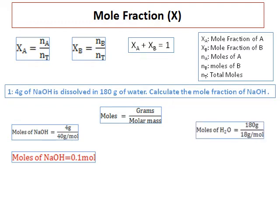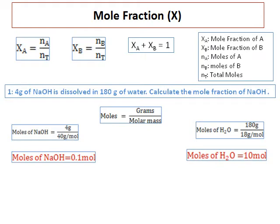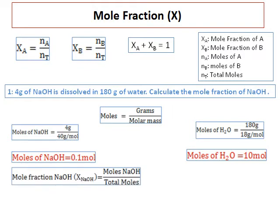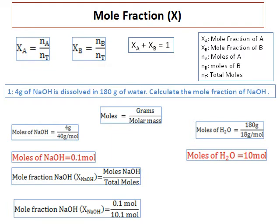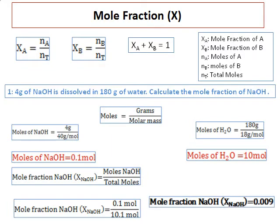Moles of water equals 180 grams divided by 18 grams per mole, which gives 10 moles. Adding them up, the total moles equals 10.1. The mole fraction of NaOH equals moles of NaOH divided by total moles: 0.1 divided by 10.1, which equals 0.009. This is one straightforward question on mole fraction; we will tackle more difficult questions as we go further.